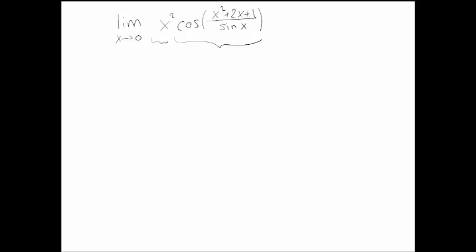What I can do, though, is I can realize that this function is squeezed between two other functions. Remember, cosine of anything, this is cosine of something crazy, but cosine of anything you want is always going to be between 1 and minus 1. So that means my function is always going to be between x squared and minus x squared.